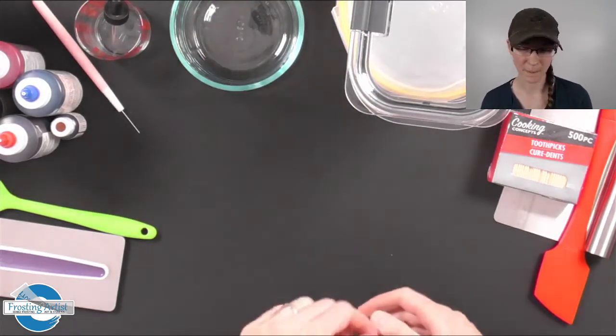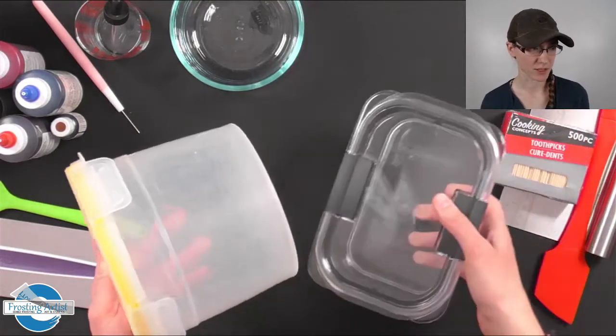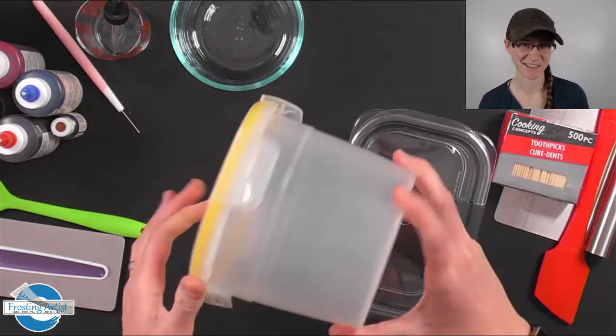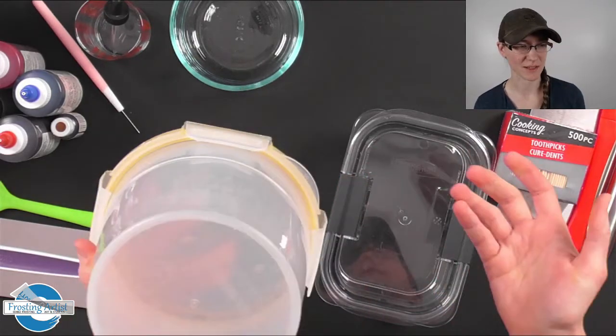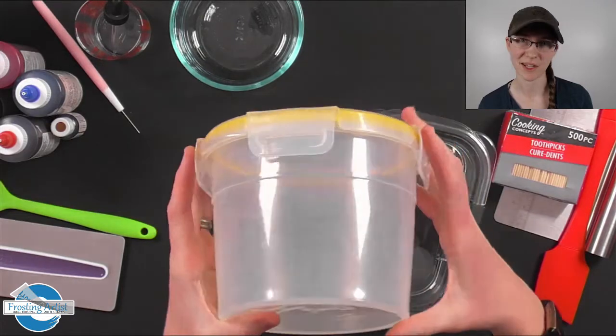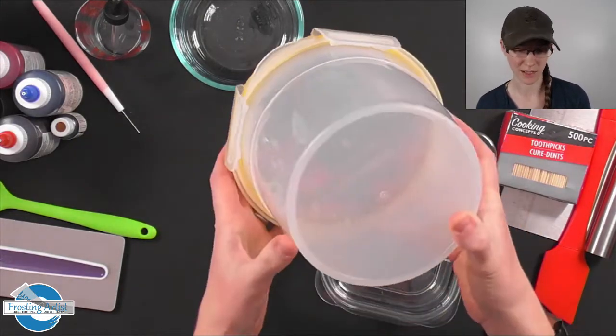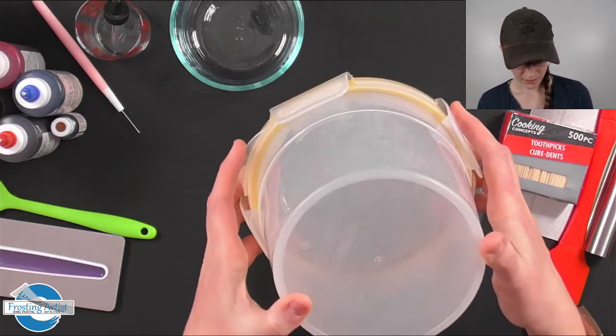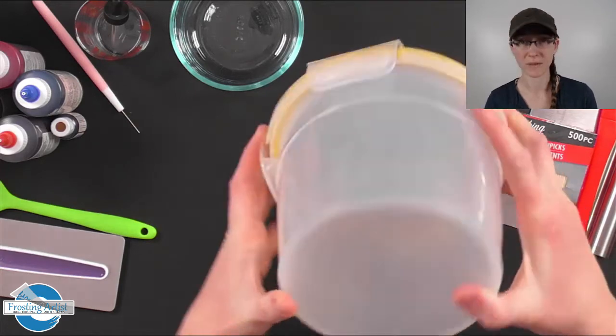You'll want to have containers. So this container I've had since like I started this adventure six years ago. It's lasted that long. This is my main container. You'll see in my videos that my whole batch of icing fits perfectly in this container. This is a seven and a half cup, 1.77 liters.